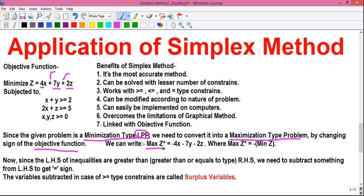if we change the sign from plus to minus, we will get max z star or max z asterisk which is the opposite of the mean z equals to minus 4X minus 7Y minus 2Z where the max z star equals to minus of mean z. And now,